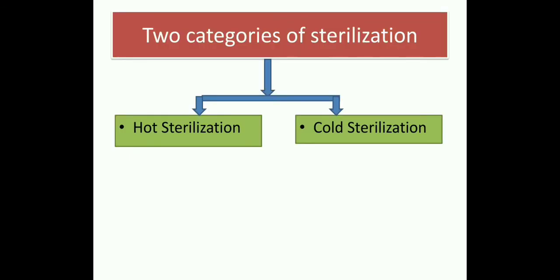Methods of sterilization can be categorized in various categories, but here for ease of categorization we have divided these sterilization methods into two major parts: hot sterilization and cold sterilization. In hot sterilization, we cover techniques which use higher temperature to achieve sterilization, and techniques which do not use higher temperature are covered under cold sterilization. Here we will see each type in detail.